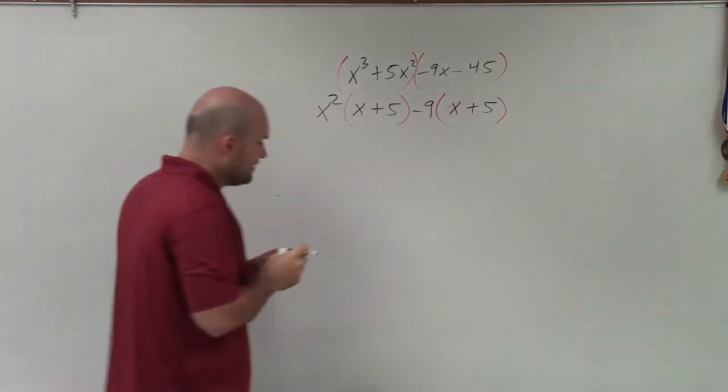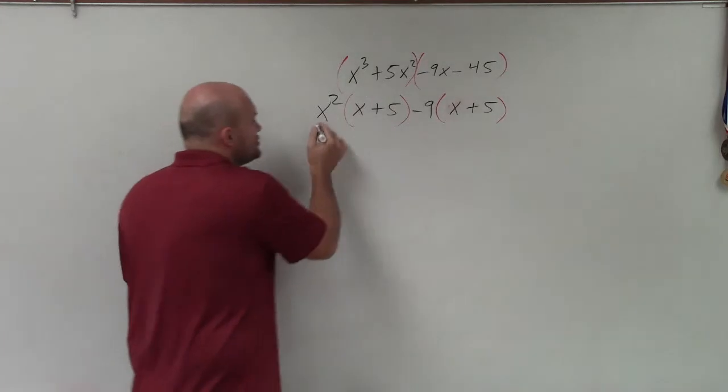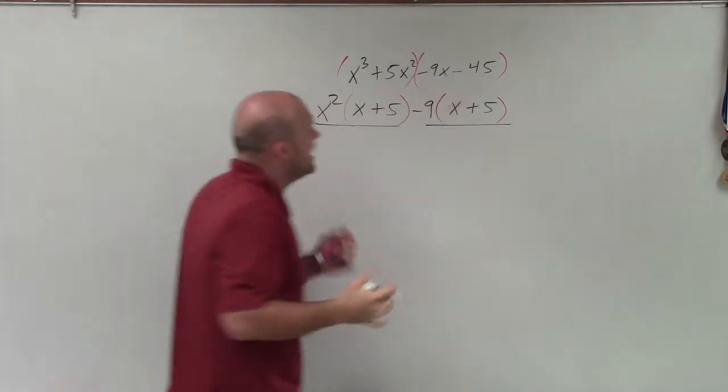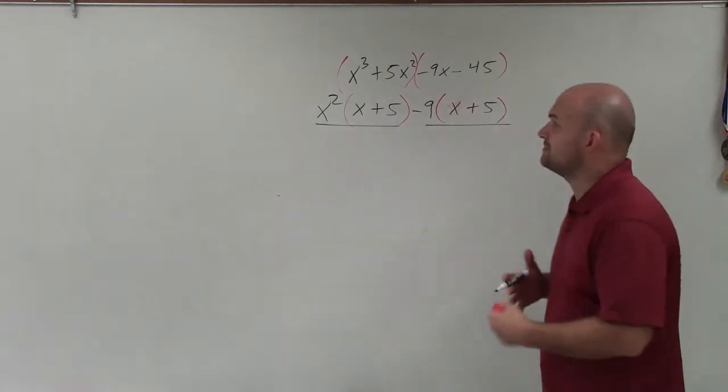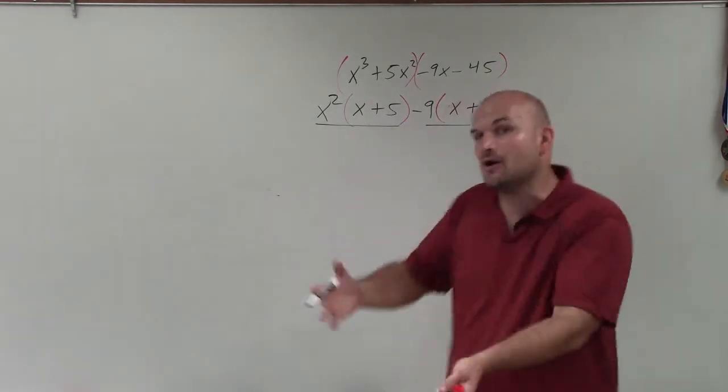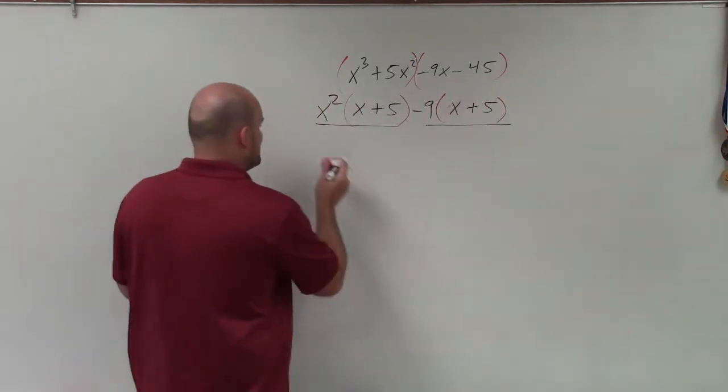OK? Now, what we notice is that between these two expressions, I have common factors of x plus 5. So since I have two common factors of x plus 5, I can now factor out that common factor x plus 5.